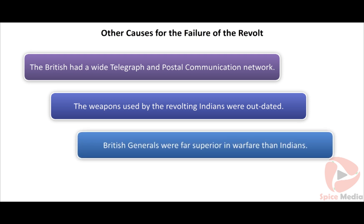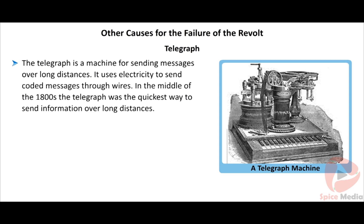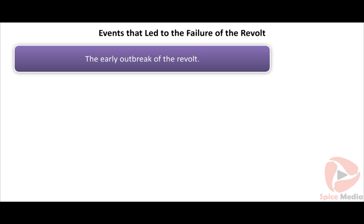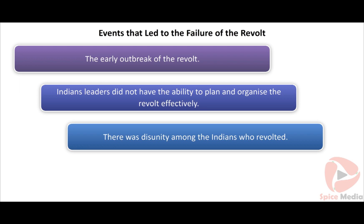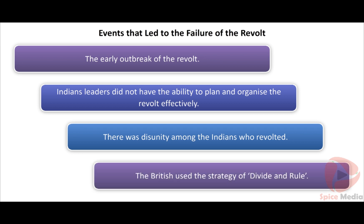British generals were far superior in warfare compared to Nana Sahib, Tantya Tope, and Rani Lakshmi Bai. The telegraph, which used electricity to send coded messages over long distances, gave the British a decisive communication advantage. The revolt was actually planned to start on 31st May 1857 all over India, but it started much earlier, leaving Indians unprepared, and this early outbreak led to its failure. Indian leaders lacked the ability to plan and organize the revolt effectively — they were brave and dedicated but lacked direction. There was also disunity: Muslims wanted to restore Mughal rule while Hindus wanted the Peshwaraj. The British used the strategy of divide and rule and did not allow Indian rulers to come together and fight.